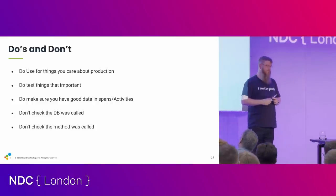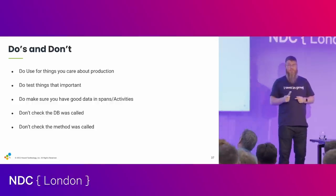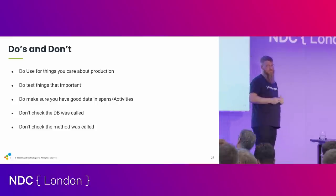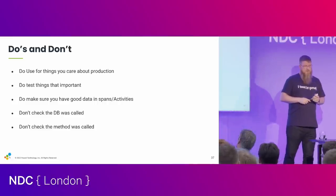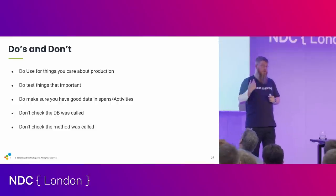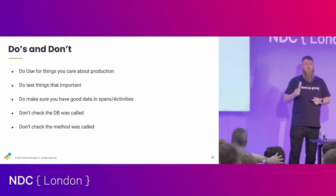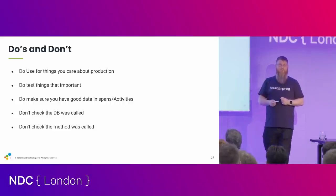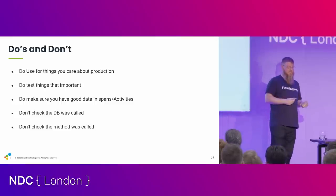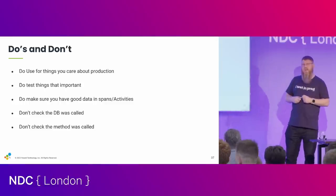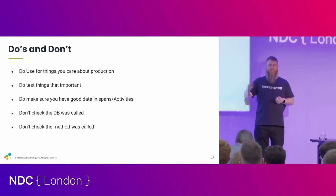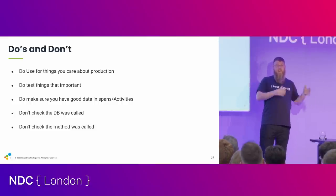A couple of do's and don'ts. Do use it for things you care about in production. Do use it to test things that are important — and make sure you're thinking about the data on your spans. Don't use it to test things that are not important. Don't check the database was called directly — don't test your query, don't test that it hit the database with 'SELECT * FROM users.' That's not what it's for. Don't check that an individual method was called — don't create a span for every method to verify a particular algorithm method was invoked. That's how we make things brittle.